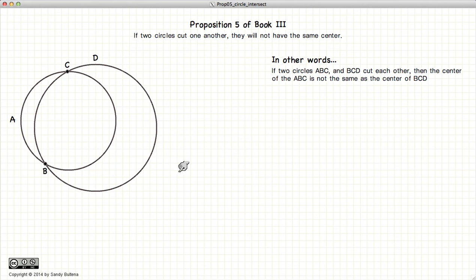which states that if we have two circles which cut each other at two points, C and B, then they do not have the same center.